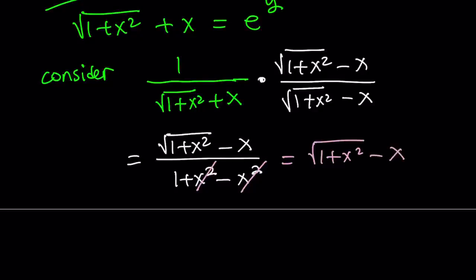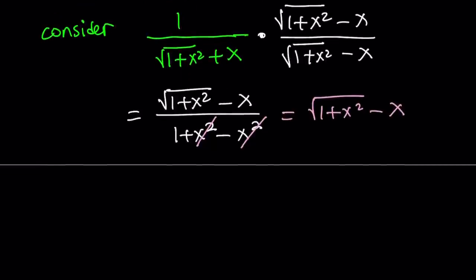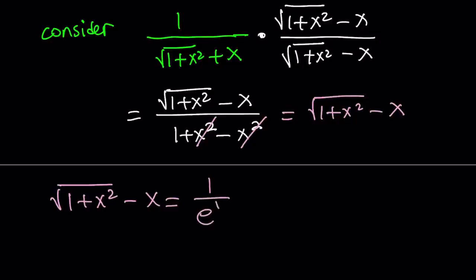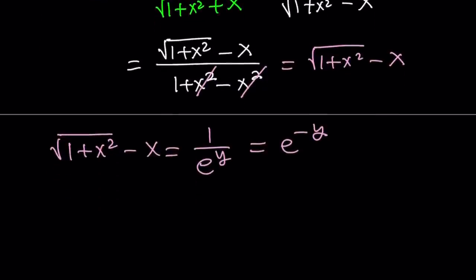Now we started off with something that equals e to the power y, and then we considered the reciprocal of that expression. Since that expression originally equals e to the power y, this reciprocal is going to equal 1 over e to the power y, which can be written as e to the power negative y.